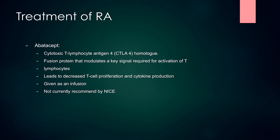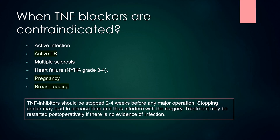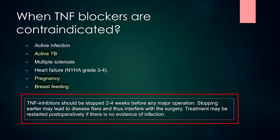Abatacept is also an option to treat RA but is not currently recommended by NICE — it is a cytotoxic T-lymphocyte antigen-4 homolog. TNF blockers are contraindicated in active TB, pregnancy and breastfeeding, active infection, multiple sclerosis and heart failure NYHA grade 3 to 4. We always test for tuberculosis before prescribing TNF blockers. TNF inhibitors should be stopped 2 to 4 weeks before any major operation and may be restarted postoperatively if there is no evidence of infection.